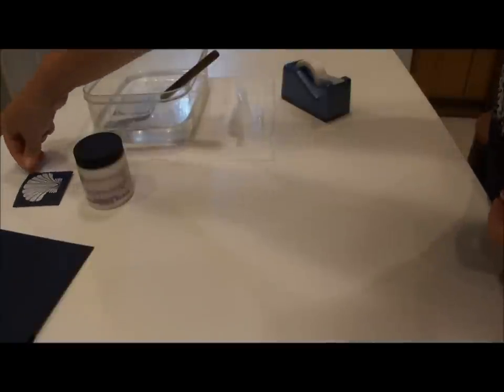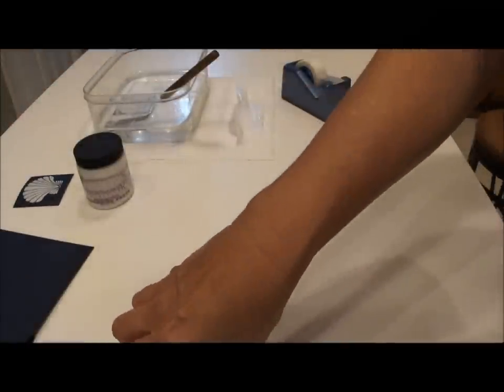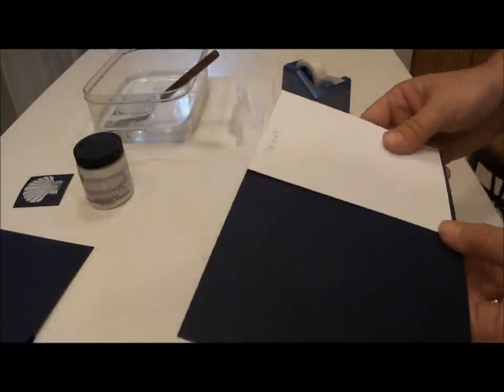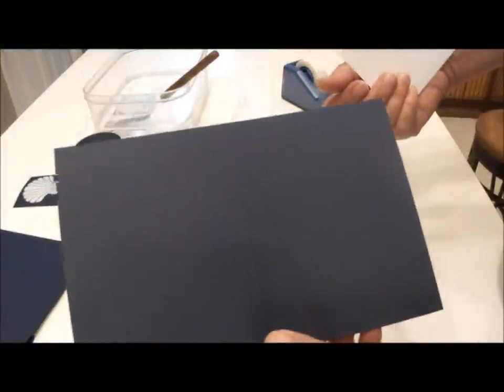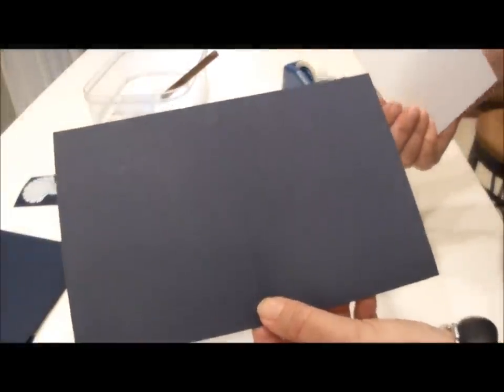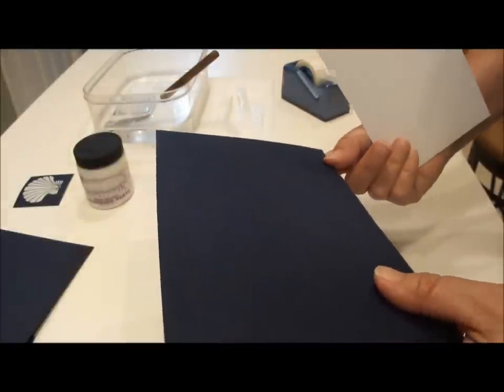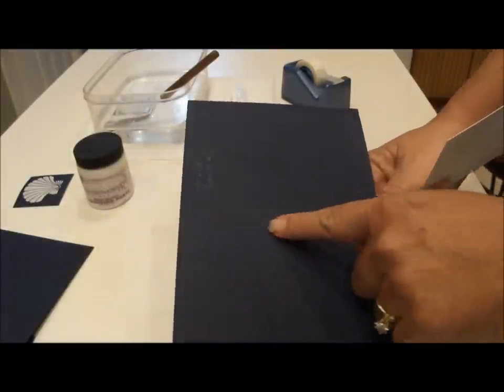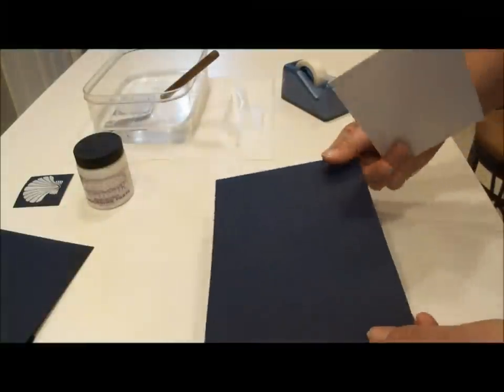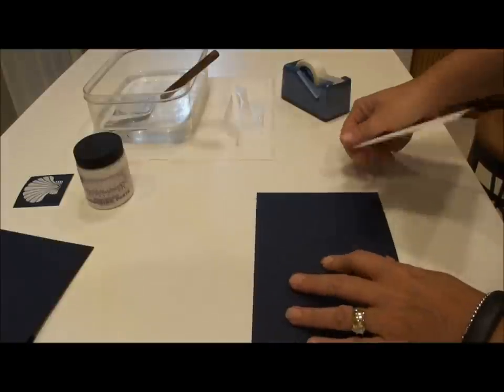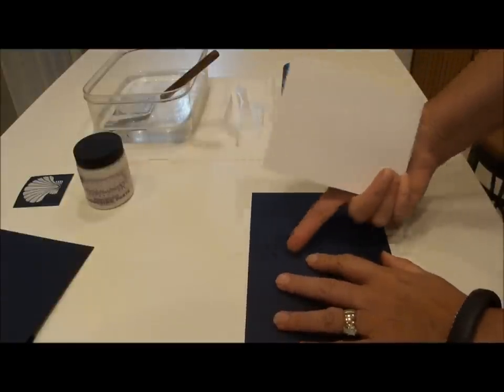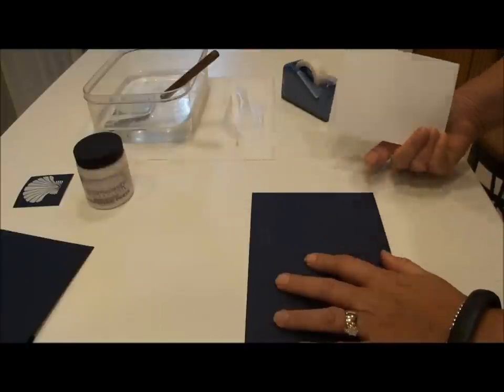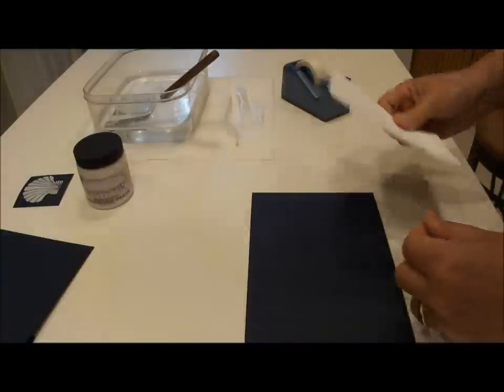And while I'm waiting, I can assemble the other parts of my card. So what I've done was I've taken a piece of navy cardstock and I cut it in half. This was eight and a half by eleven. So the final piece is five and a half inches by eight and a half inches. And then I score it long ways at four and a quarter inches. When I use dark cardstock, I usually will line the inside of the card so that I can write a note or stamp a message.